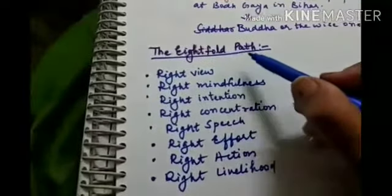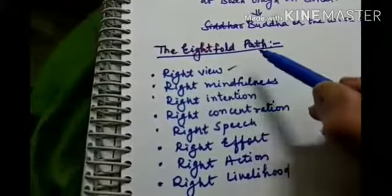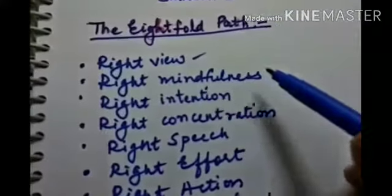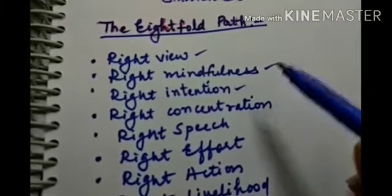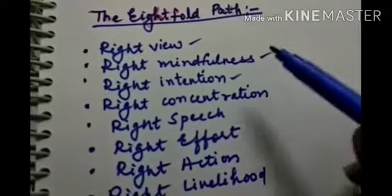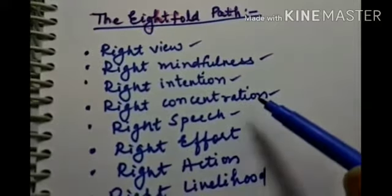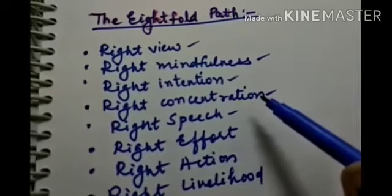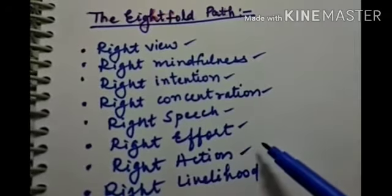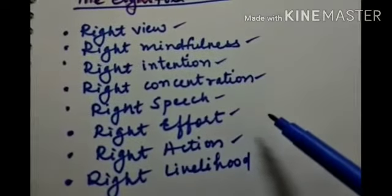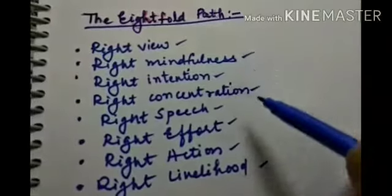Buddha also explained the eightfold path. Gautam Buddha's teachings focus on the eightfold path and the four noble truths. The eightfold path consists of: right view, right mindfulness, right intention, right concentration, right speech — using speech positively and not using foul language — right effort, right action, and right livelihood, meaning the way of living should be correct.